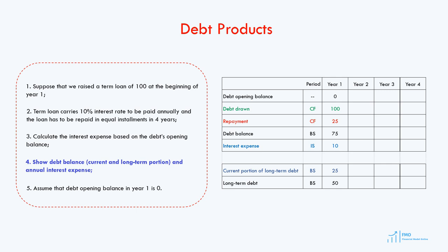In year 2, we start with a debt opening balance of 75 — the debt balance at the end of year 1. Debt drawn is 0 in year 2, as we only raise debt in year 1. Debt repayment is 25 in accordance with the repayment schedule. The debt ending balance in year 2 is 50 — the difference between the opening balance of 75 and repayment of 25. The interest expense is 75 times 10%, giving us 7.5. The current portion of the long-term debt is 25, and the long-term debt reported on the balance sheet is 25.